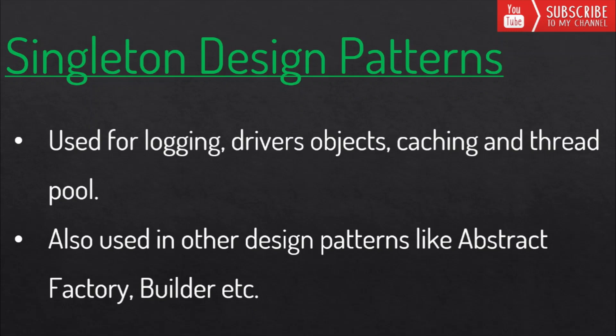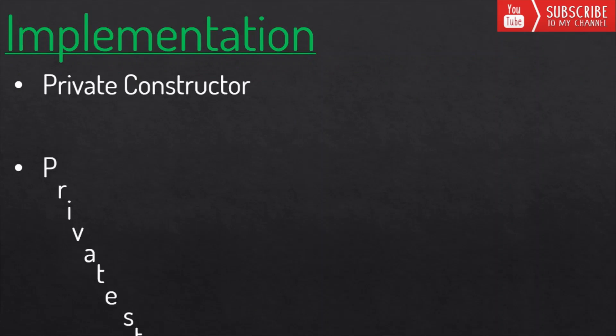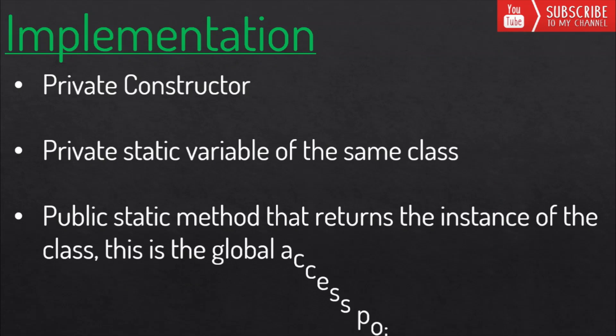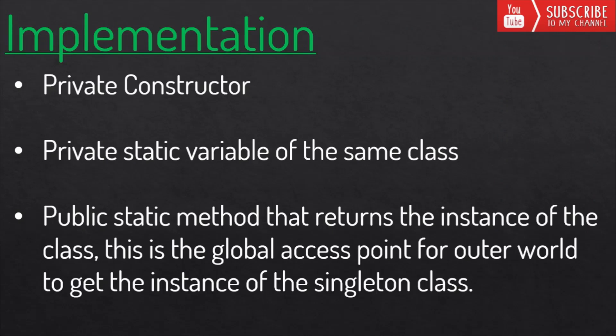Now let's see how to implement the design pattern. All approaches have some common concepts: it should have a private constructor to restrict instantiation from other classes, a private static variable of the same class that is the only instance, and a public static method that returns the instance — this is the global access point for the outer world.